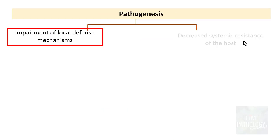Hospital-acquired pneumonia, also called nosocomial pneumonia, is an infection occurring during hospital stay for more than 48 hours in a non-intubated patient. Organisms implicated include Klebsiella, E. coli, and Pseudomonas. Ventilator-associated pneumonia is a subset of hospital-acquired pneumonia occurring in patients who have been intubated via endotracheal tube for more than 48 hours. Organisms implicated include Streptococcus pneumoniae, Pseudomonas aeruginosa, and MRSA.